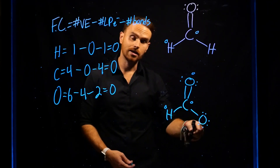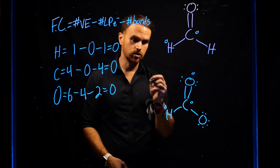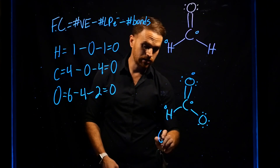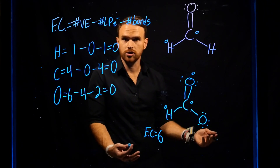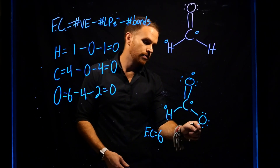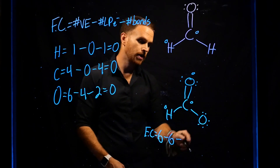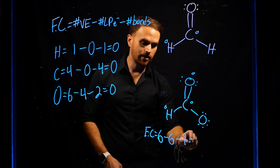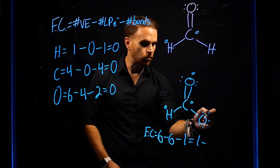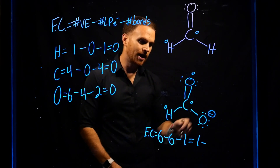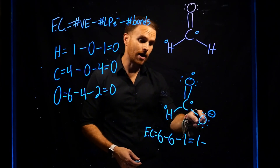However, notice that the other oxygen in formate looks a little bit different. If we were to determine the formal charge of that oxygen: six valence electrons, minus six lone pair electrons, minus one bond — this gives that oxygen a formal charge of negative one, which we place next to the atom and circle to indicate the formal charge.